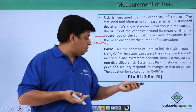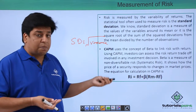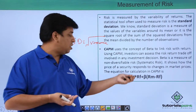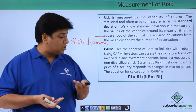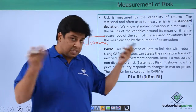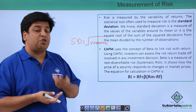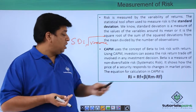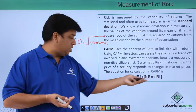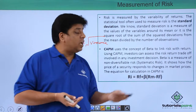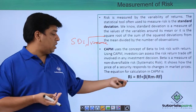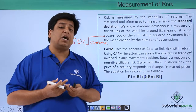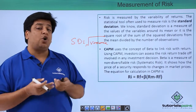The CAPM equation is: Rᵢ (expected rate of return) = Rᶠ (risk-free return) + β (beta/risk) × (Rₘ - Rᶠ), where Rₘ is the market return. If you know the expected rate of return and have data for the market return and risk-free return, you can use this formula to calculate beta — that is, to calculate your risk.